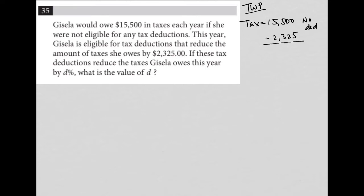I'm going to go to my calculator and say, okay, when she does have the eligibility, we have this $15,500 minus $2,325. So her tax bill goes down to $13,175 for the tax. And I'll say with deductions.